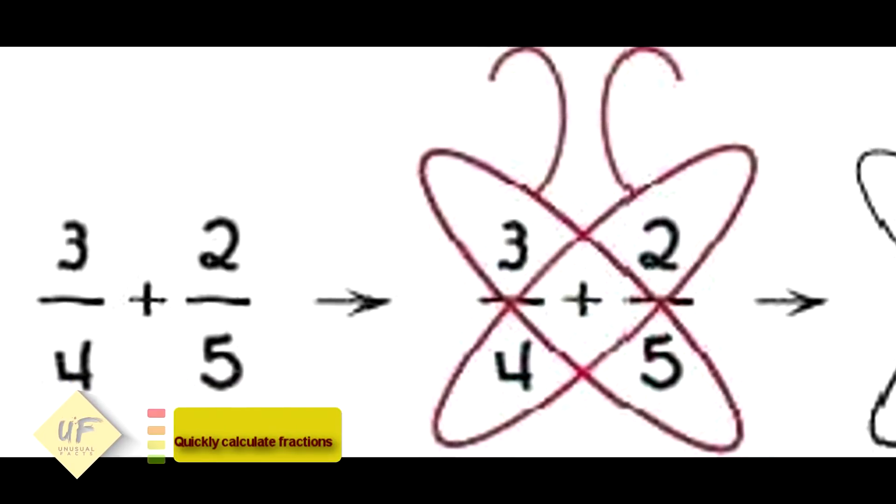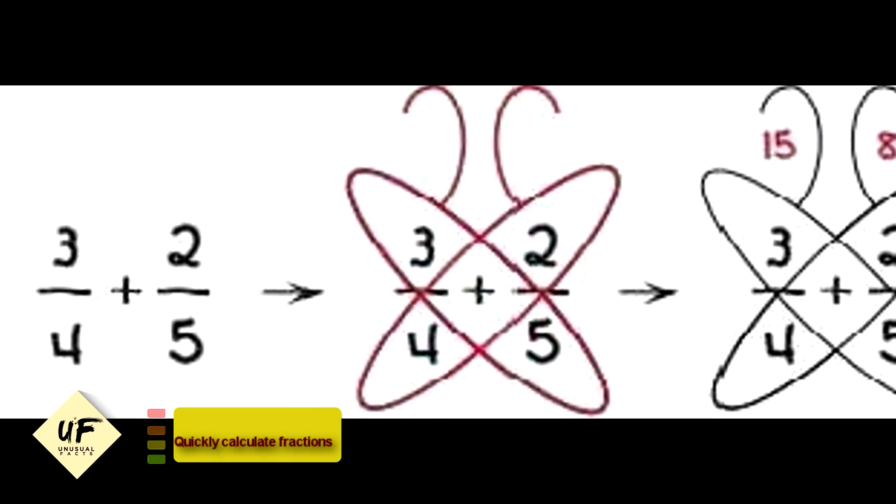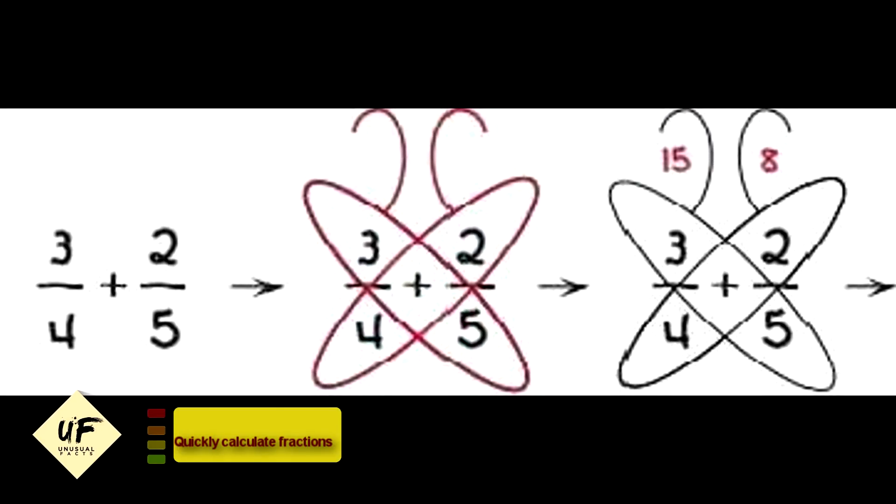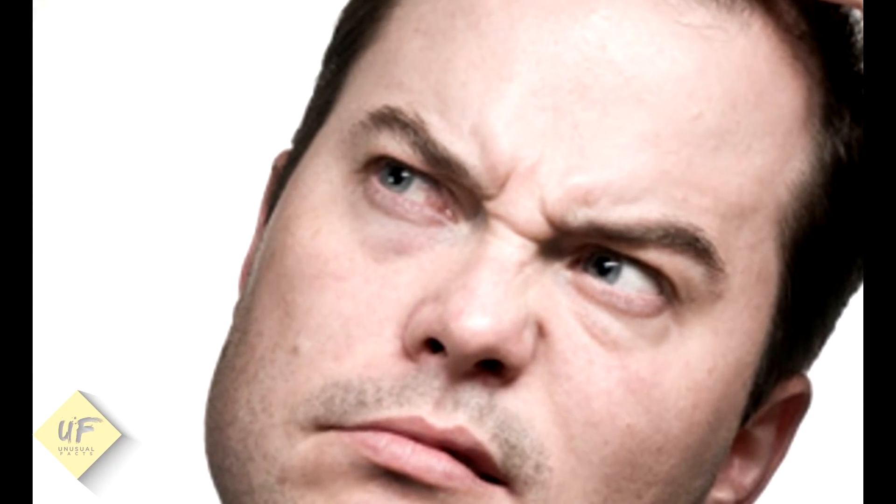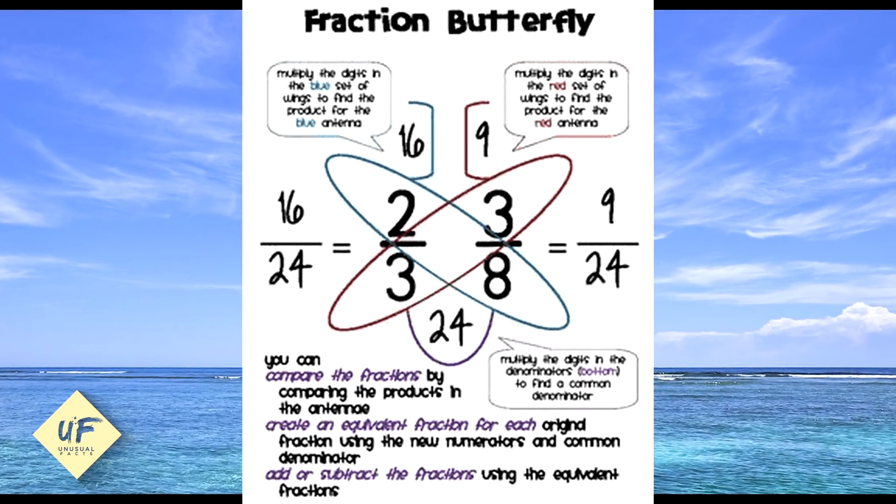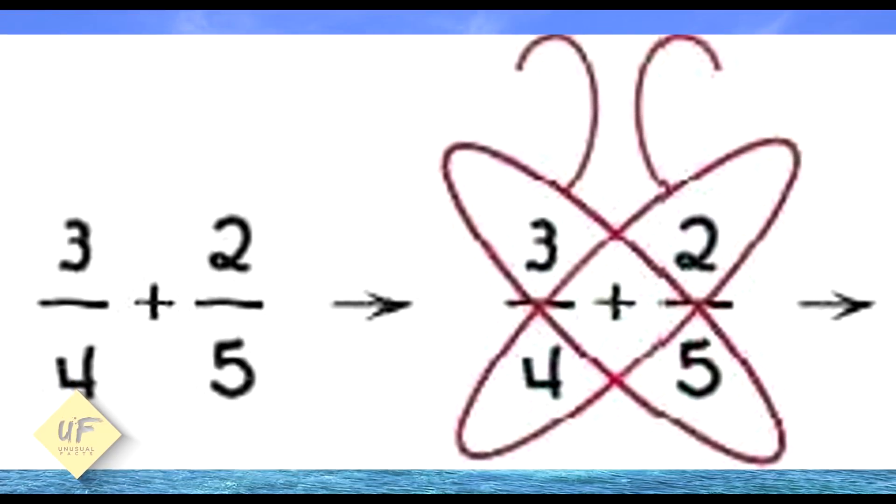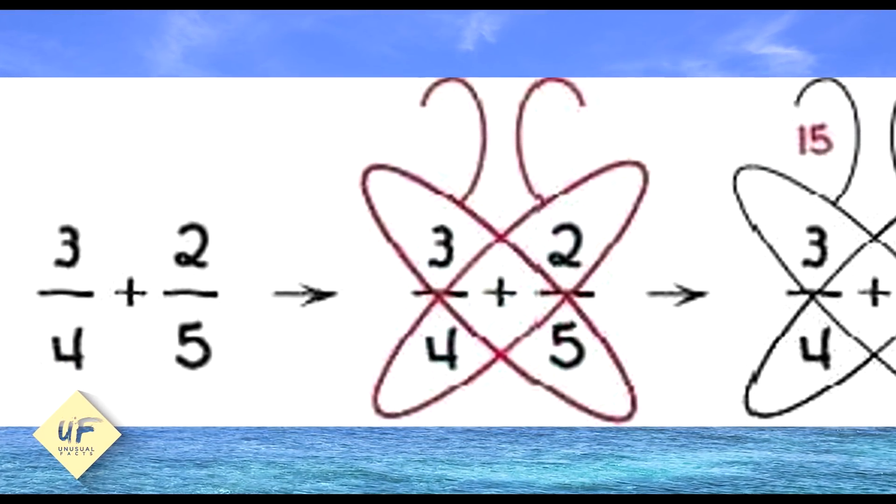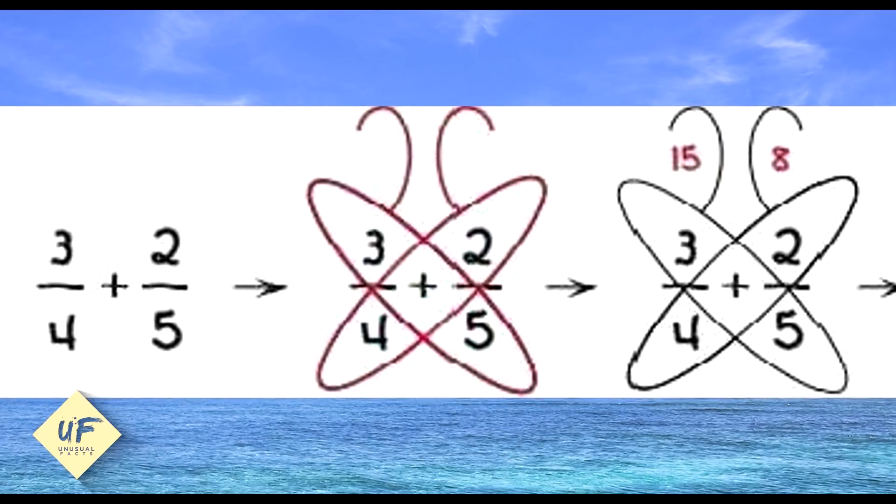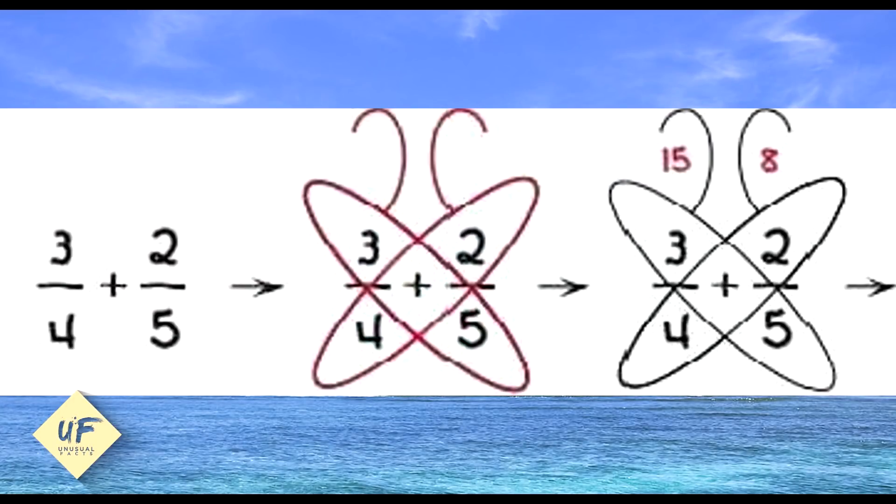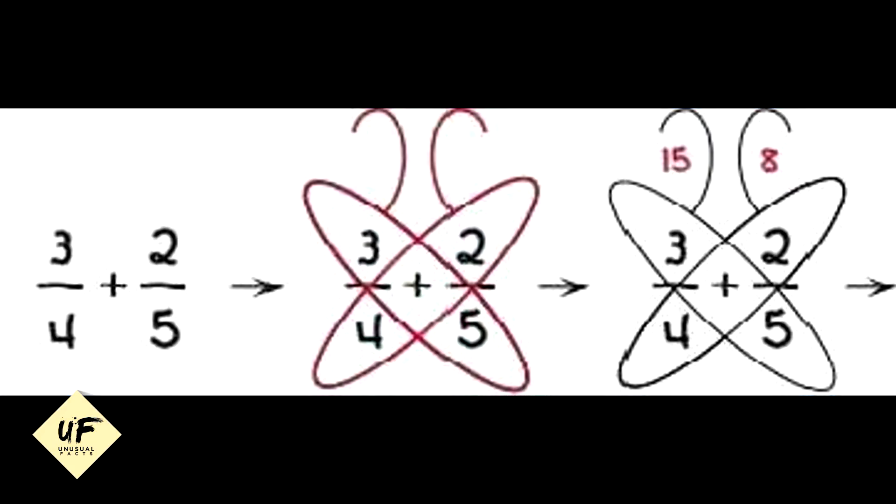Number four: Quickly calculate fractions. Even though fractions are not something most of us deal with on a daily basis, this method is very useful, especially for school-age children. Turn the multiplication into a butterfly by drawing diagonal ellipses, then multiply the digits in each ellipse. Write the results down in the appropriate area.